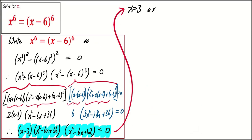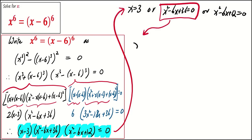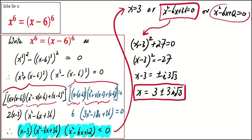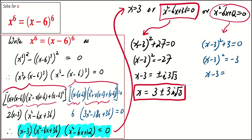This means that x equals 3, or x squared minus 6x plus 36 equals 0, or x squared minus 6x plus 12 equals 0. For the second factor, by completing the square, we get (x minus 3) squared equals negative 27, so x minus 3 equals plus or minus i times 3 root 3, and hence x equals 3 plus or minus 3i root 3. We obtain two complex solutions from the second factor. For the third factor, we get x equals 3 plus or minus i root 3 by using the same technique.